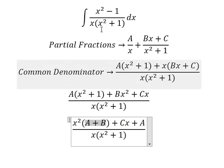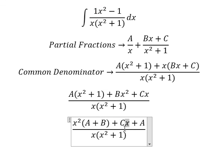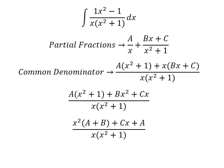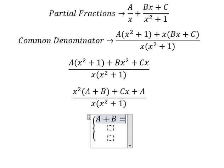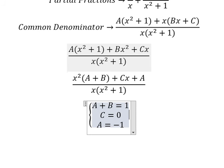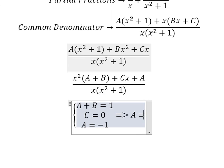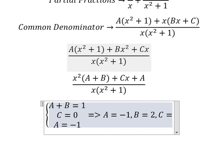So A plus B equals to one, because the coefficient of x squared is one here. About x, we don't have an x term so C equals to zero. About the constant, A equals to negative one. Now we create the system of equations and solve: A equals to negative one, B equals to two, C equals to zero.